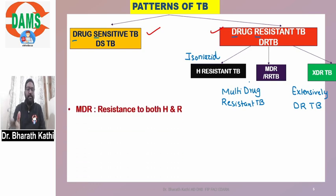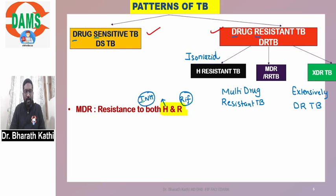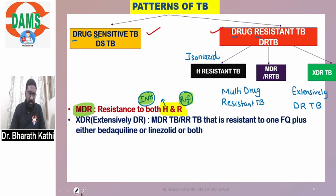Coming to the classical definition: MDR-TB means resistance to both H and R — H is isoniazid and R is rifampicin. So if you see a TB bacterium resistant to both isoniazid and rifampicin, your answer should be MDR-TB.